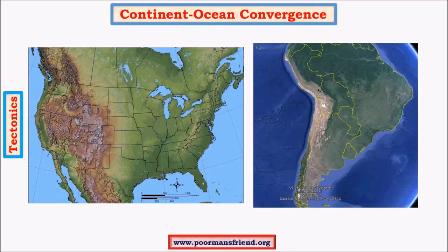All these plate interactions have created these kinds of mountains. The mountain formation involves a trench - we can see trenching - but the trenches here are not as deep as we have seen in ocean-ocean convergence. Still, trenching is significant, but here the mountain formation is due to the upthrust of continental landmass.